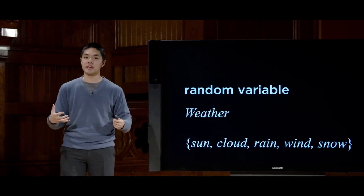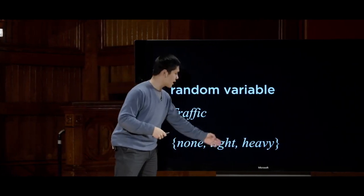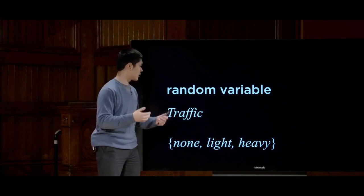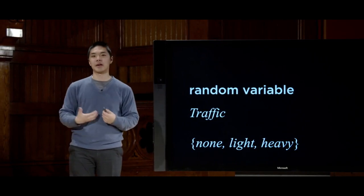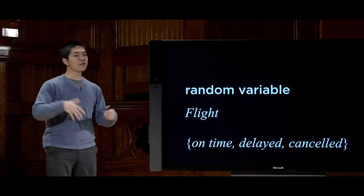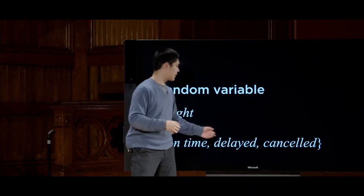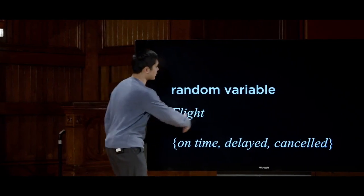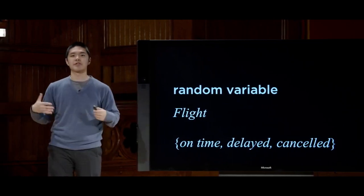Other random variables might be something like traffic — with values none, light, or heavy. Or a random variable 'flight' might have values on time, delayed, or canceled. The person encoding these random variables into a computer needs to decide what the possible values actually are. And often I want to know something about the probability that my random variable takes on each of those possible values. This is what we call a probability distribution.